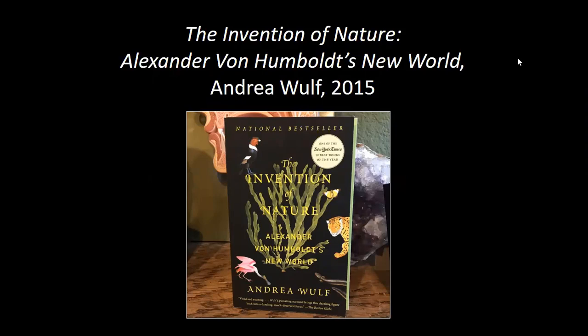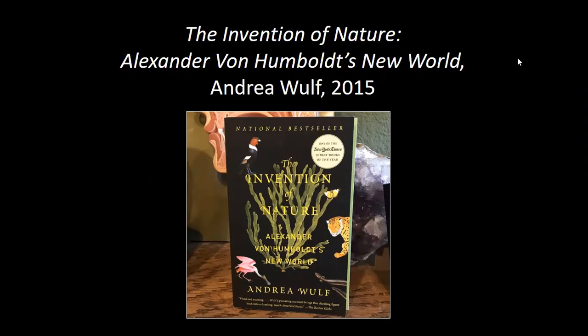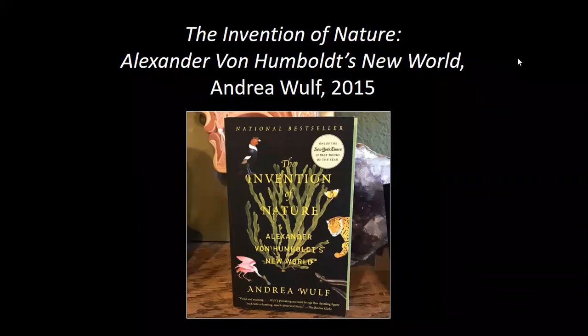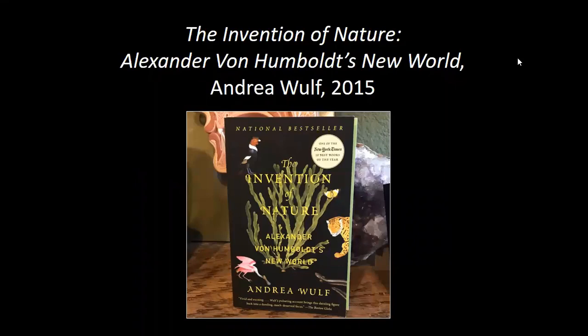It's not fair to call Humboldt a botanist or biologist or volcanologist — he was interested in everything. In 19th-century woolen clothes with wooden, brass, and glass instruments, he explored South America, walking up mountains with all his equipment, taking measurements of temperature, altitude, and air pressure, and doing inventories of plants and animals. He's credited as the first person to predict the impact of humans on Earth — predicting the Anthropocene and human-induced climate change.